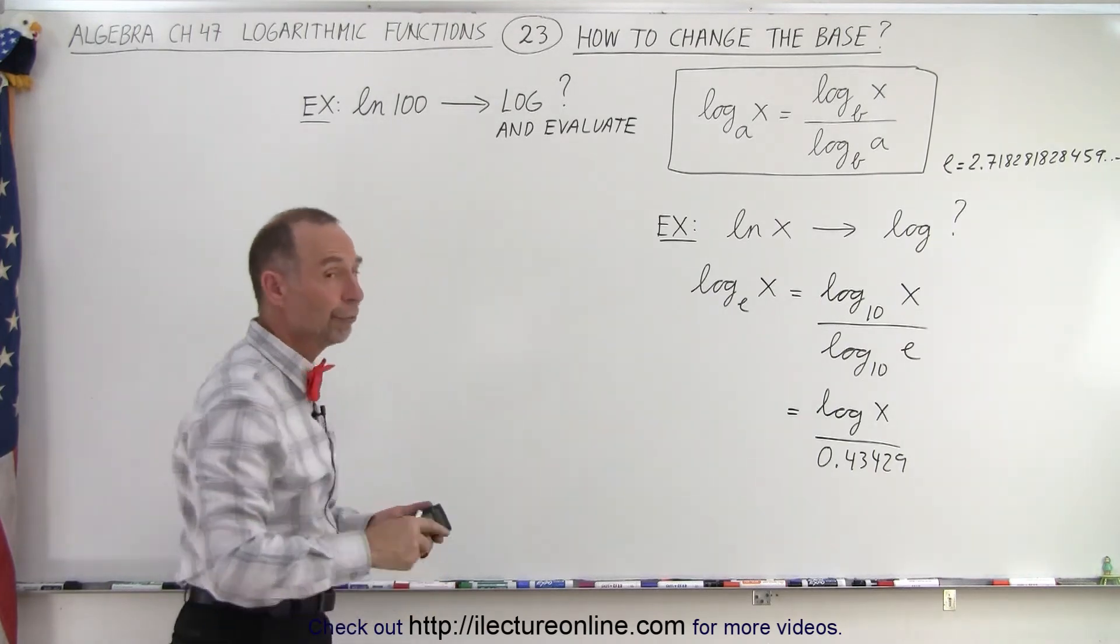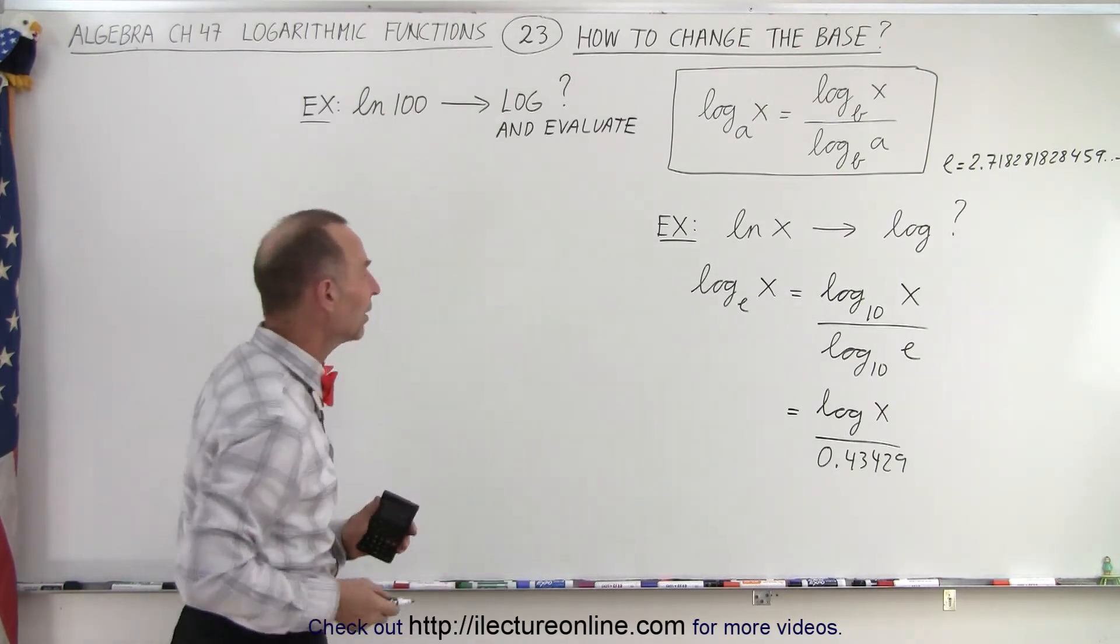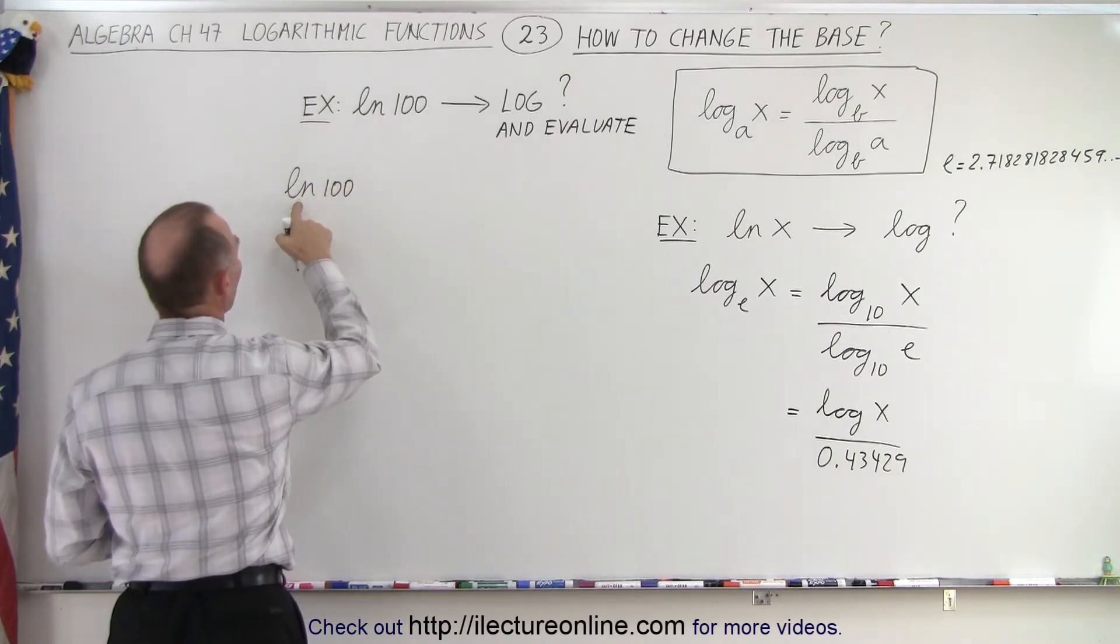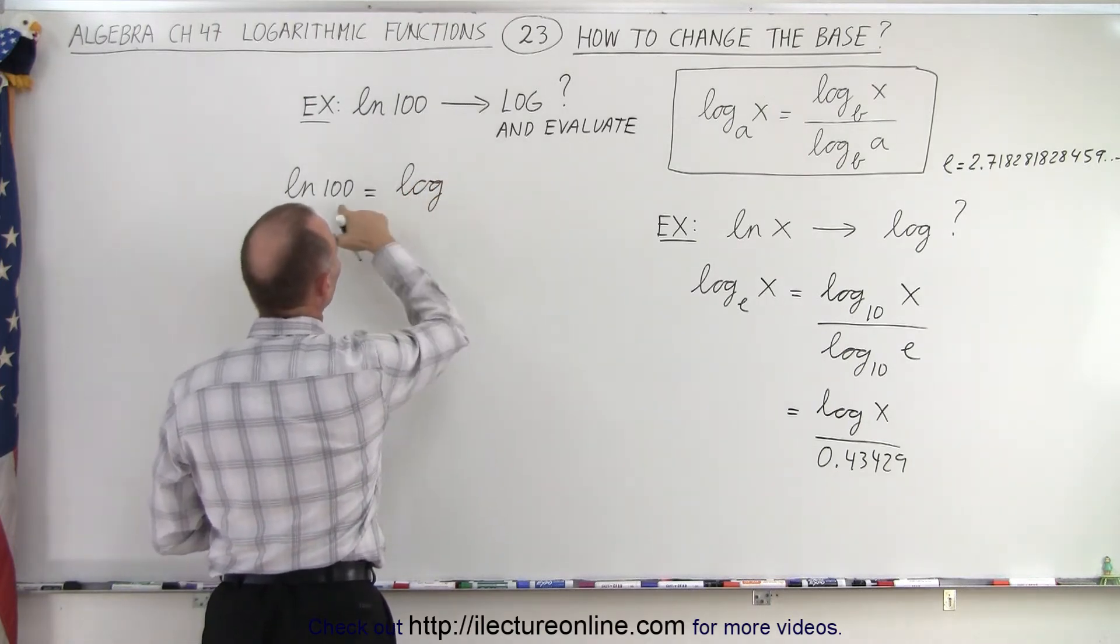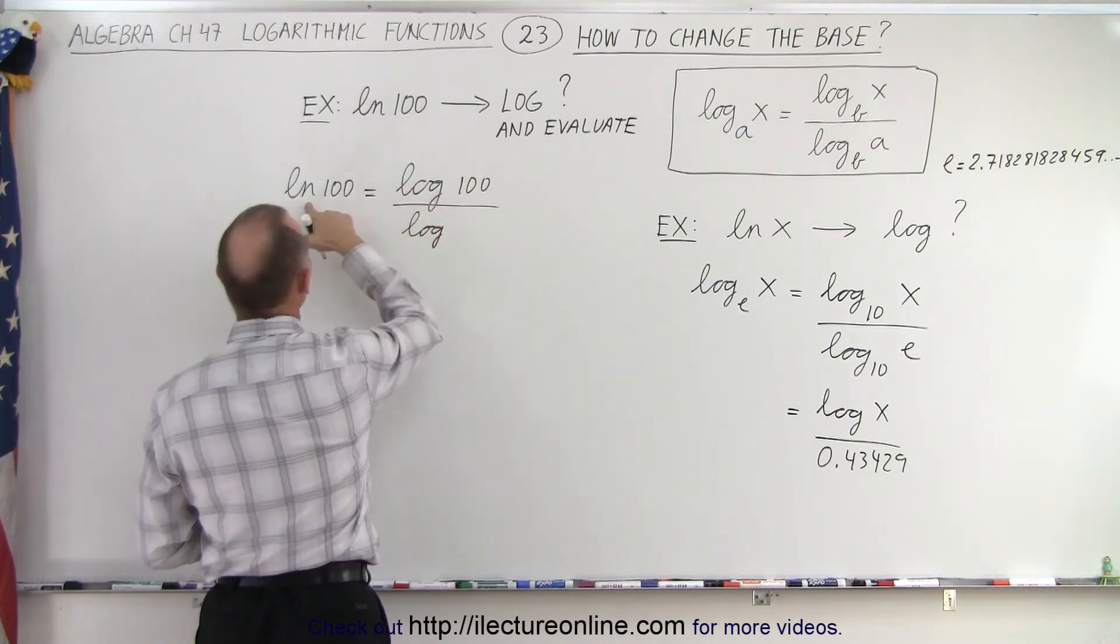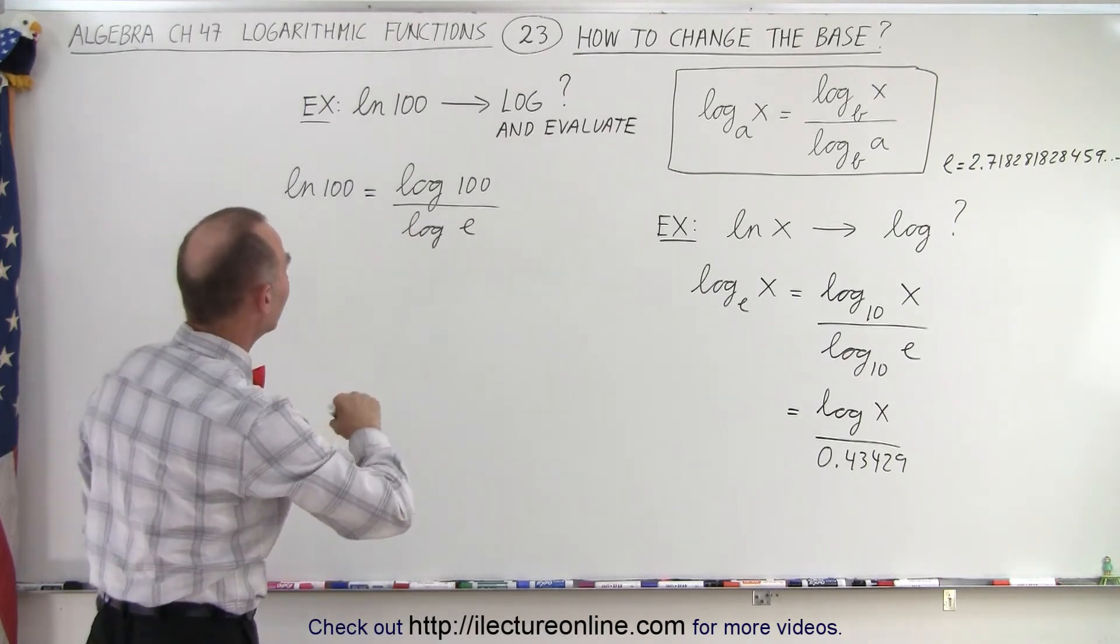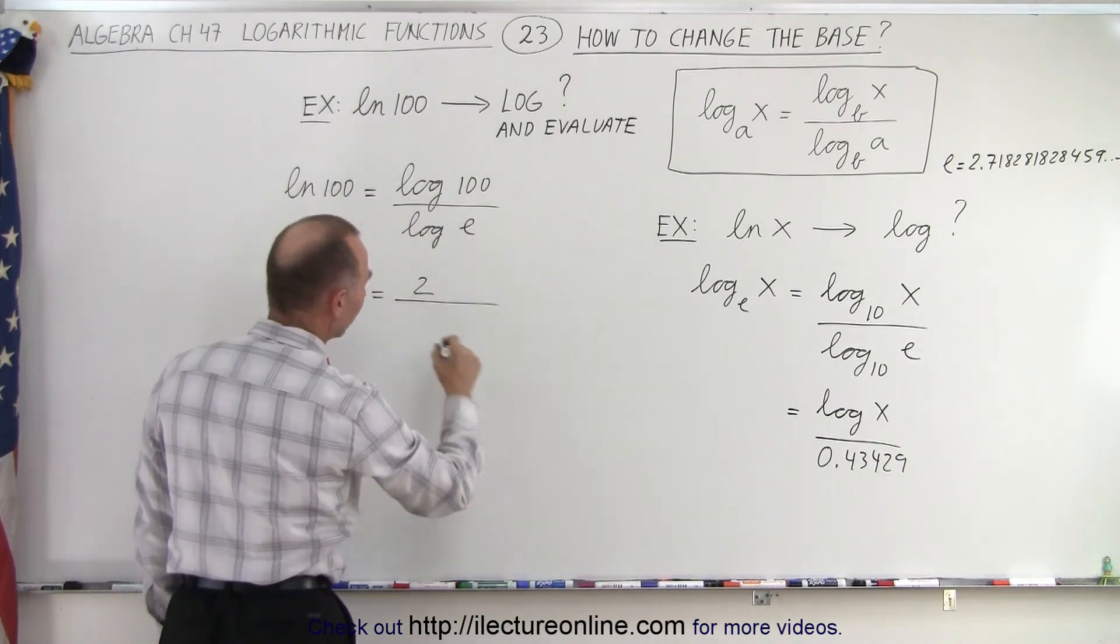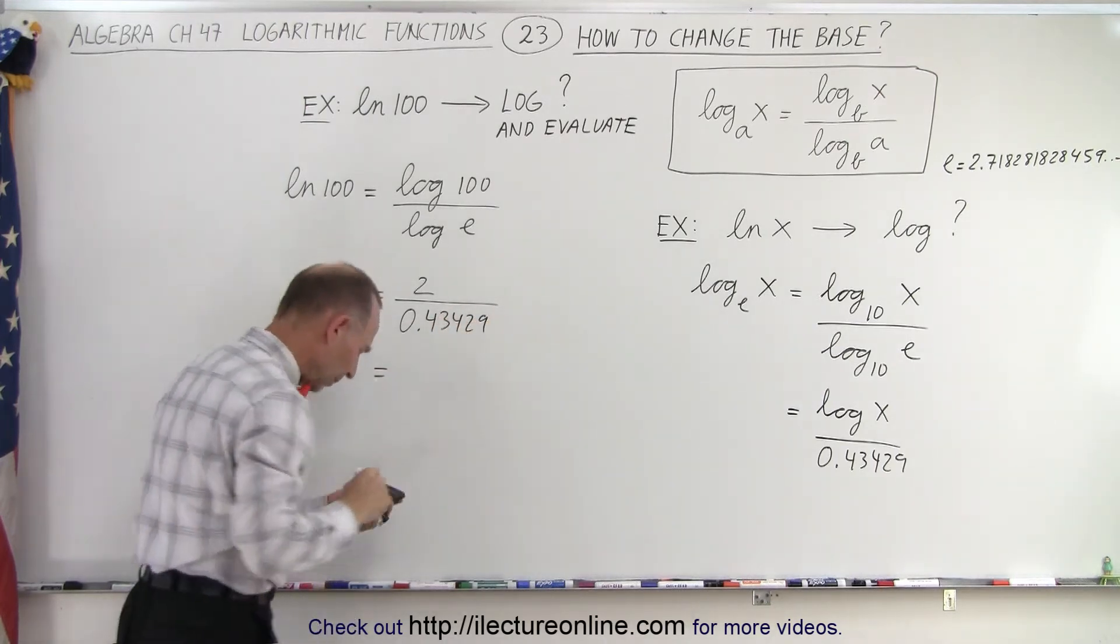The natural log of 100, convert it to the common log, and then evaluate it. And then we can compare both sides to see if we did it correctly. So, the natural log of 100, that's basically the log of base e of 100, that's equal to the log base 10 of 100, divided by the log base 10 of the base here, which is e. Now, we already figured out what that was equal to, and we know that the log of 100, that's equal to 2. So, this is equal to 2, divided by 0.43429. So, let's see what that's equal to.